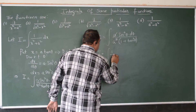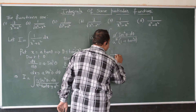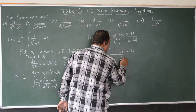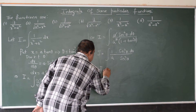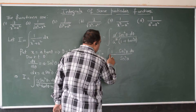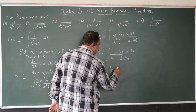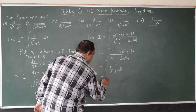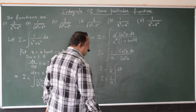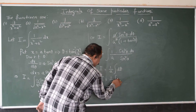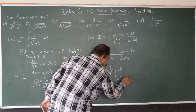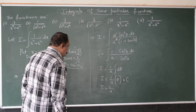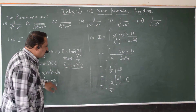I will cancel one a, so I equals 1 by a integral of secant square theta d theta divided by 1 plus tan square theta. We know that 1 plus tan square theta equals secant square theta. So the secant square theta in the numerator and denominator cancel out, giving d theta. Therefore I equals 1 by a integral d theta, which equals 1 by a into theta plus constant c of integration.